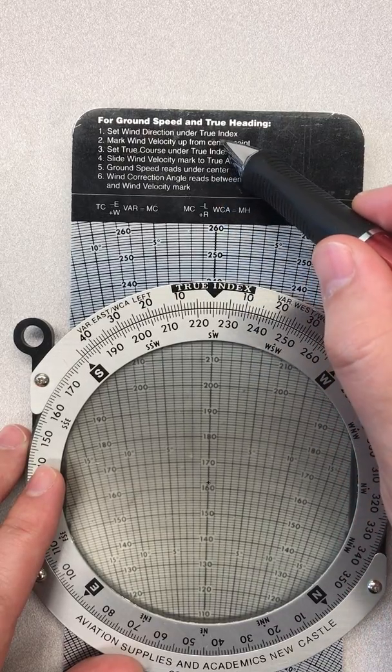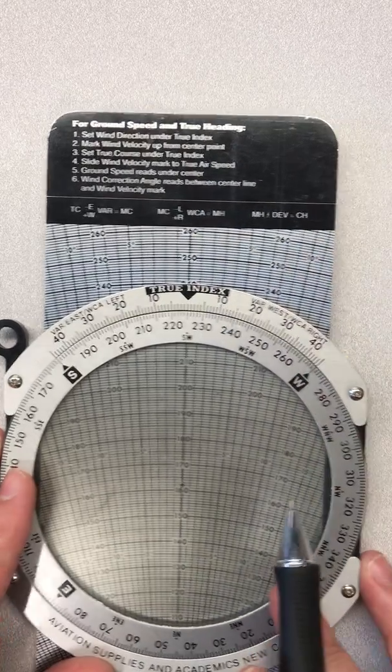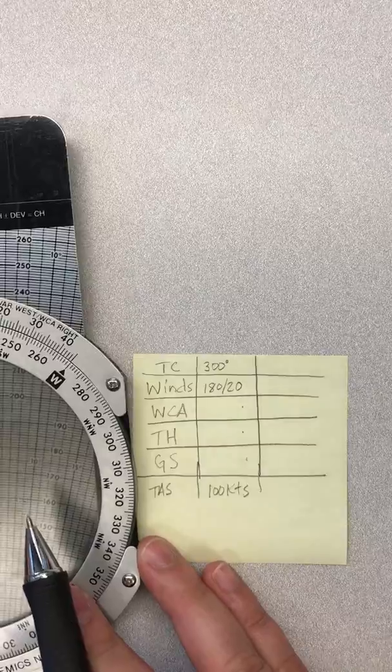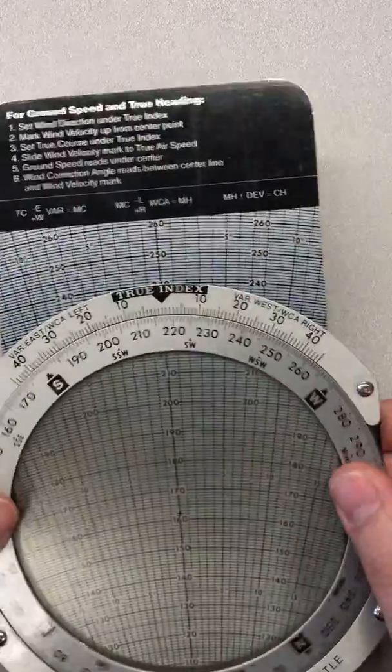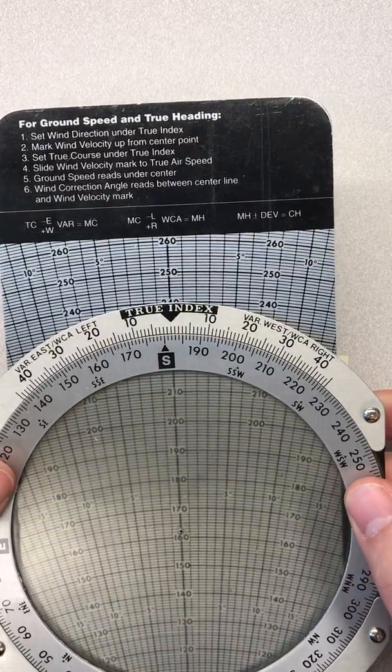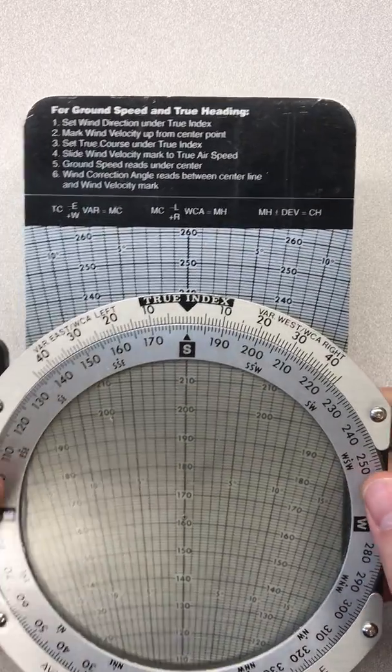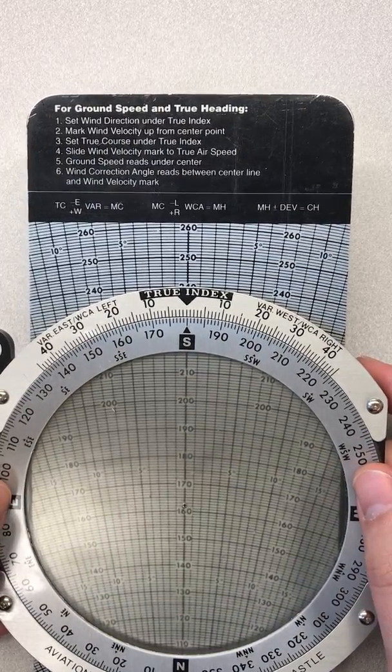First things first, it says step one: set our wind direction under true index. So let's refer to this wind direction 180. We're going to move so we see 180 under the true index, so it should be south, and that's step one.